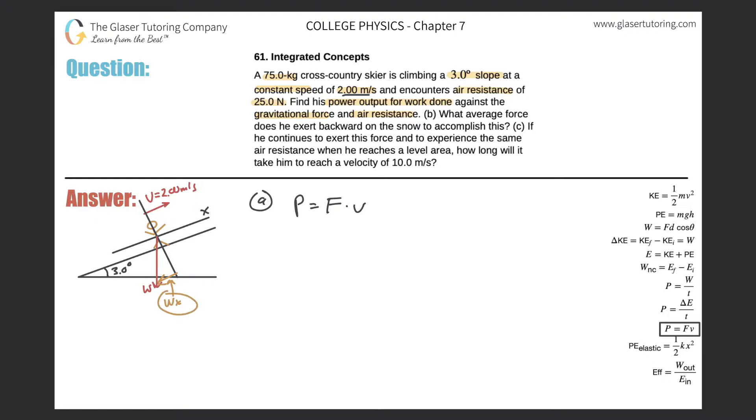So that's one of the forces that I need to take into account because that's what is opposing the velocity. And they also tell me that there is air resistance of 25 newtons. Now remember, air resistance will oppose the motion. It's kind of like friction.